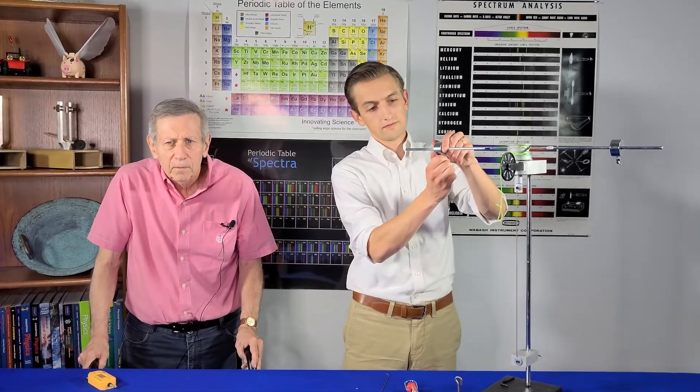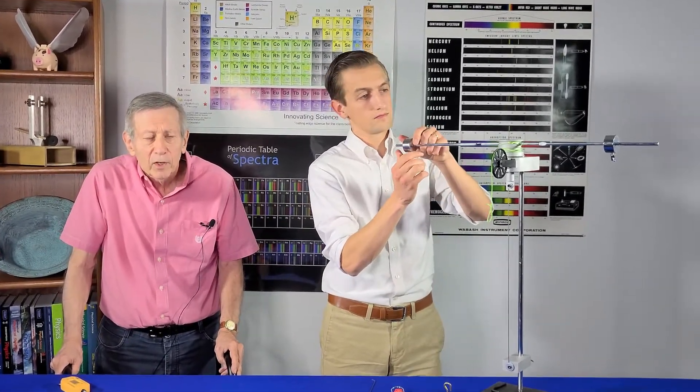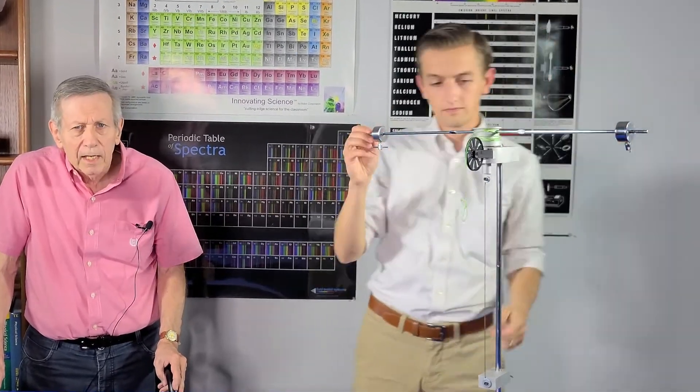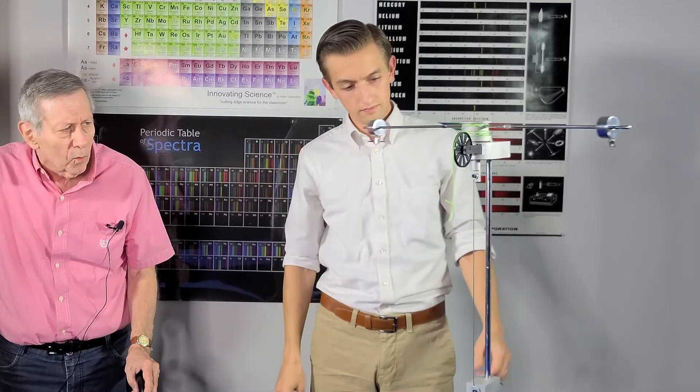The period of oscillation of the pendulum is governed by two variables: the pendulum's moment of inertia and the spring constant of the wire.